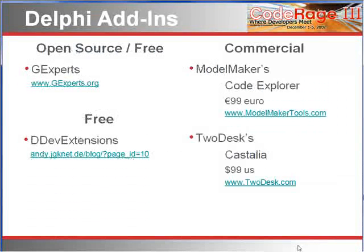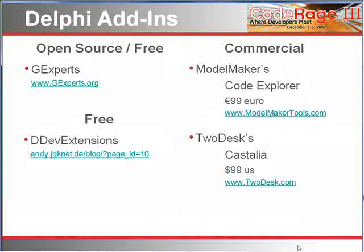So here's the tools we're going to look at, in exactly that order: the open source GExperts, the free DDEV Extensions, the commercial ModelMaker's Code Explorer, and 2Desk's Castellia. ModelMaker is priced in Euros. For those of you on this side of the pond, that is about $125. For those of you on the other side of the pond, that is about $25.